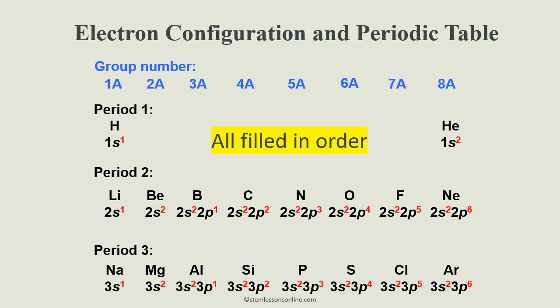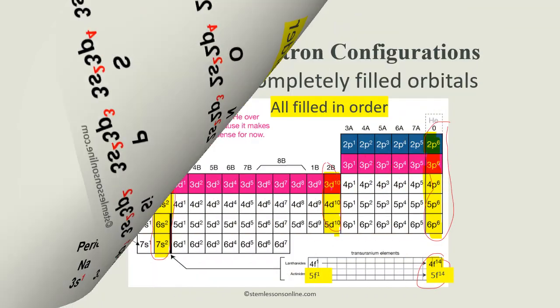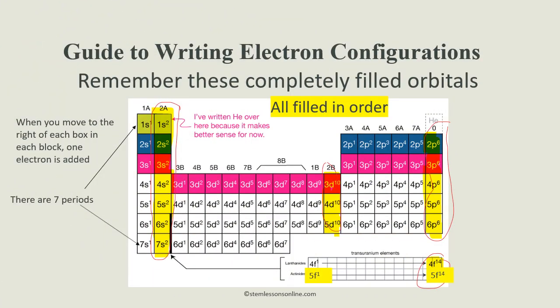Elements in the same column of the table have related outer shell electron configuration. All 2A elements have NS2 outer electron configuration. 3A elements have NS2 P1 electron configuration. Similarity of valence shell electron configuration implies that we can determine the electron configuration of an atom by its position on the periodic table. That is why the properties resemble for each group.